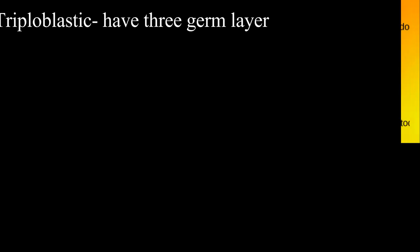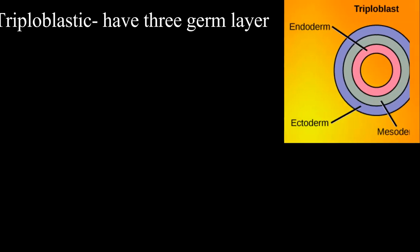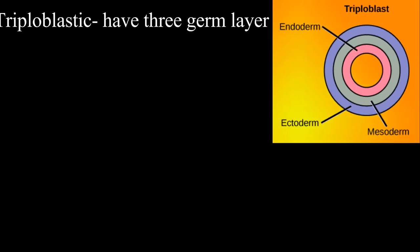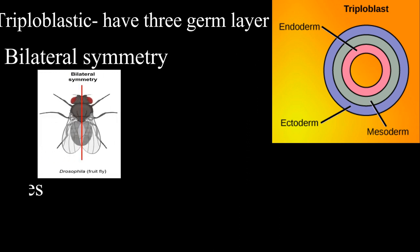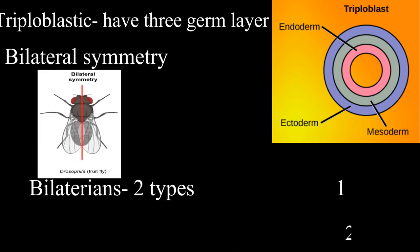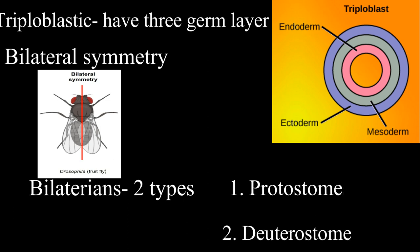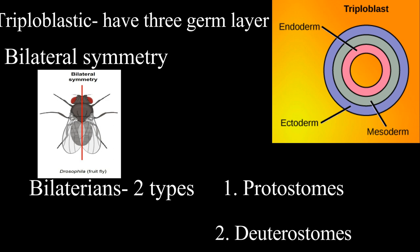All other remaining metazoans have three germ layers, hence are called triploblastic animals, and have bilateral symmetry, hence called bilaterians. Bilaterians are further divided into two groups: protostomes and deuterostomes.